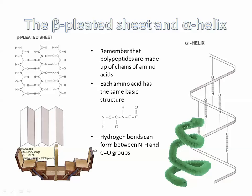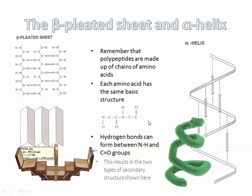To summarize: primary structure is the sequence and number of amino acids, and secondary structure is where that chain of amino acids can do some mini folds, mini spirals, and mini beta-pleated sheets.